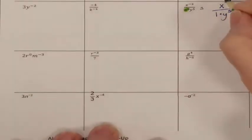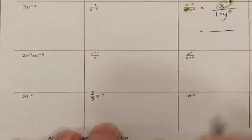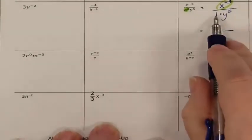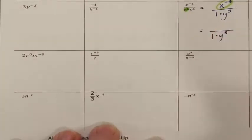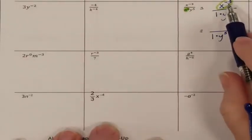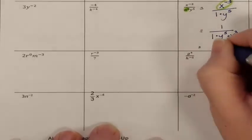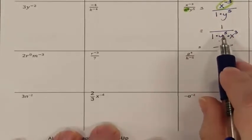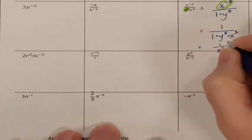Now I observe that this X has a negative exponent, which means the X needs to move. Here's my fraction bar. The X is the only thing moving — the 1 did not have a negative exponent, so it stays. The Y did not have a negative exponent, so it stays. X is the only thing that moves: it was in the numerator, so it moves down to the denominator, and when it moves, its exponent turns positive. I am not allowed to have an empty numerator, so the numerator is a 1. Simplifying: 1 all over Y to the 5th times X to the 3rd, and written alphabetically, the answer is 1 over X to the 3rd, Y to the 5th.